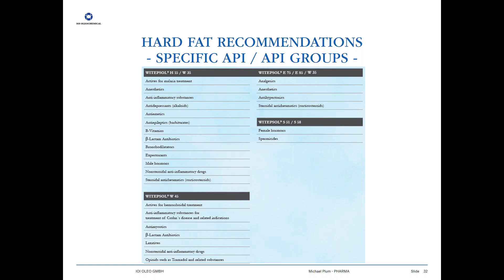We are often asked by customers to recommend a specific Vitebsol type for a specific API. Many customers won't disclose the API they are using, and in that case the general recommendation is Vitebsol H15, which is our all-purpose base. If the customer faces problems during experiments, they will provide more detailed information, and then further refined recommendations can be made. We have clustered APIs into certain groups with specific Vitebsol hard fat recommendations — this table is part of the Vitebsol brochure available via our website.